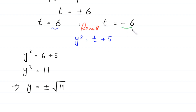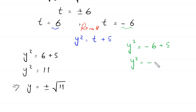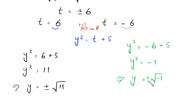When t equals negative 6, the equation becomes y squared equals negative 6 plus 5, so y squared equals negative 1. Taking the square root of both sides, y equals square root of negative 1, which is plus or minus i.